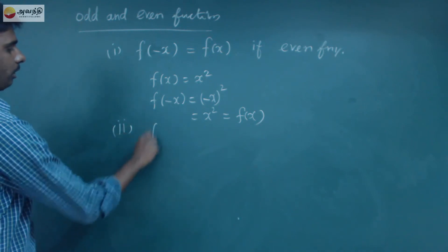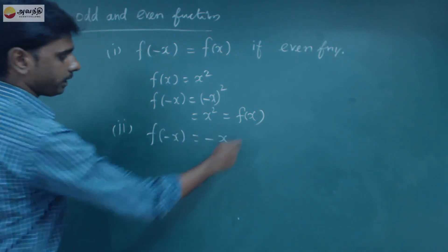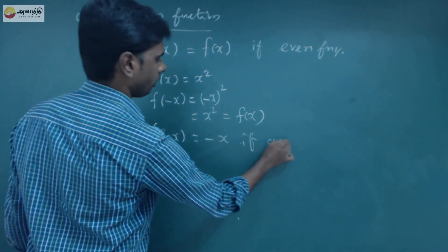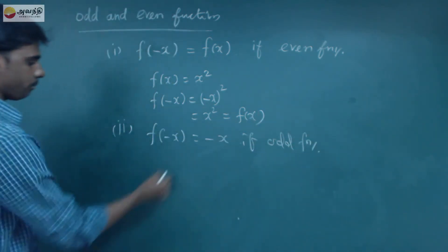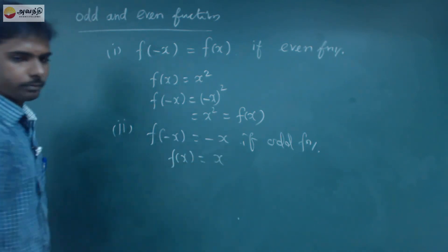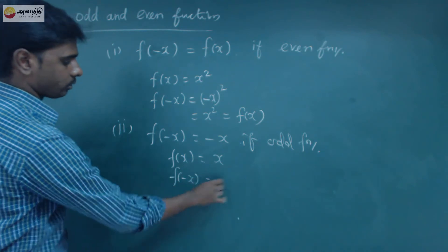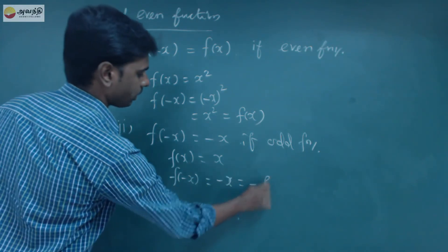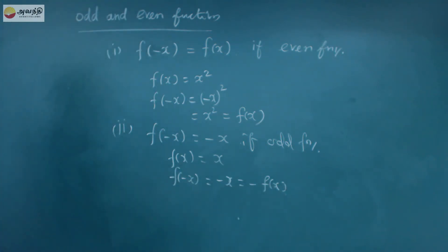Similarly, for the odd function — f of minus x substituted gives minus f of x. What function is that? It is an odd function. For example, f of x equals x. If we substitute minus x, we get minus x, so it is an odd function.